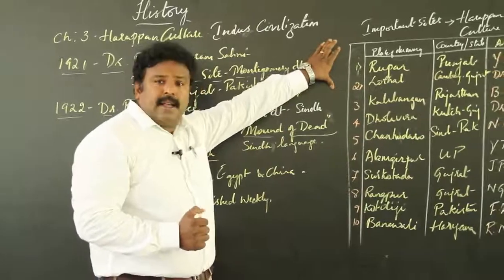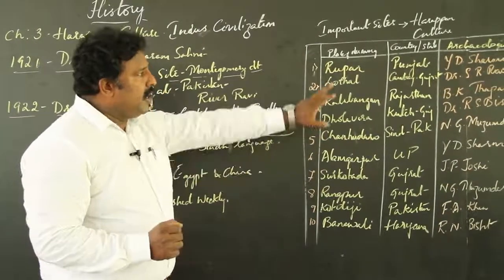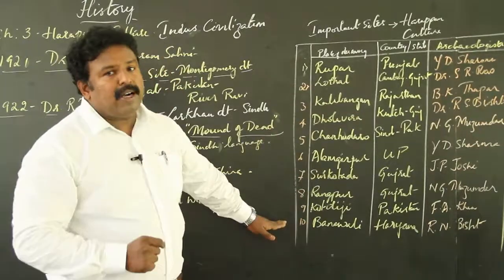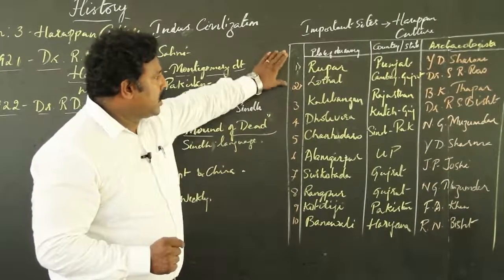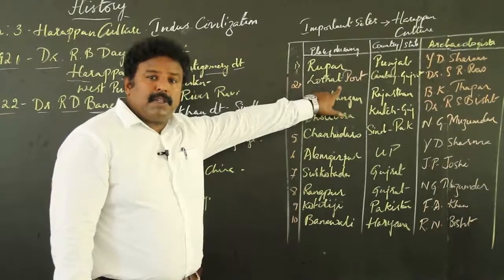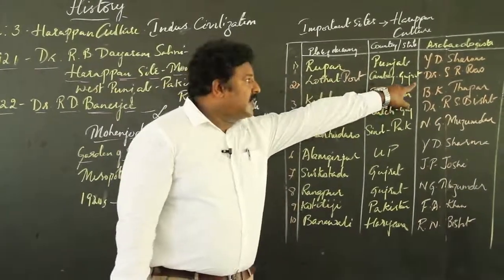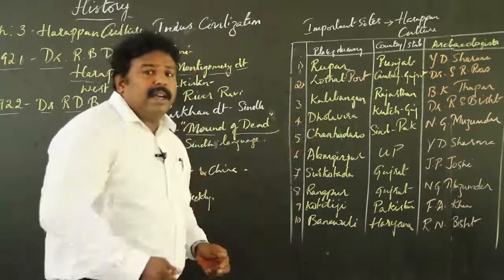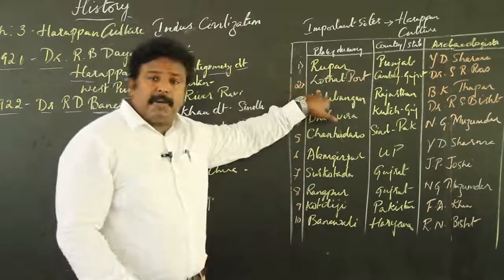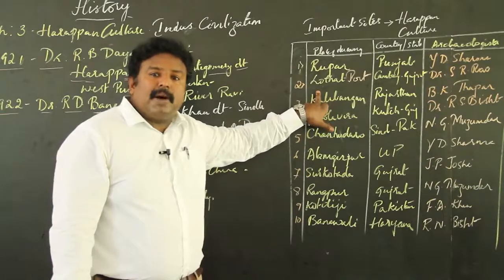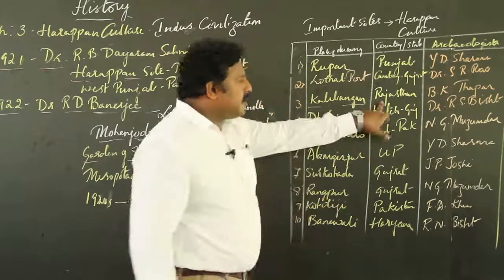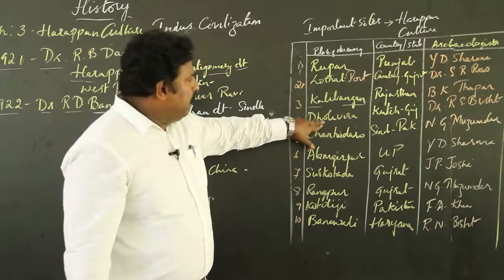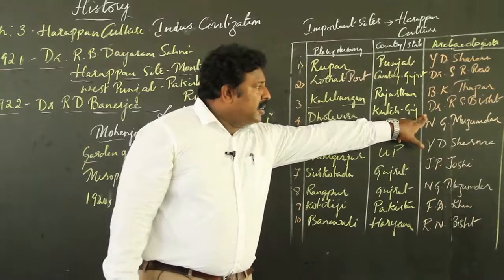Regarding the important sites, I have listed down the place of discovery, the country as well as the name of the archaeologist. Please make a note of all these names — you can draw a table to keep track. Starting from Lothal, an important port found at Cambay, Gujarat, excavated by Dr. S. R. Rao — very important for your exams and any competitive examinations. Next, Kalibangan in Rajasthan, India, excavated by B. K. Taphar. Then Dolavira, which is in Kutch of Gujarat, excavated by Dr. R. S. Bisht.